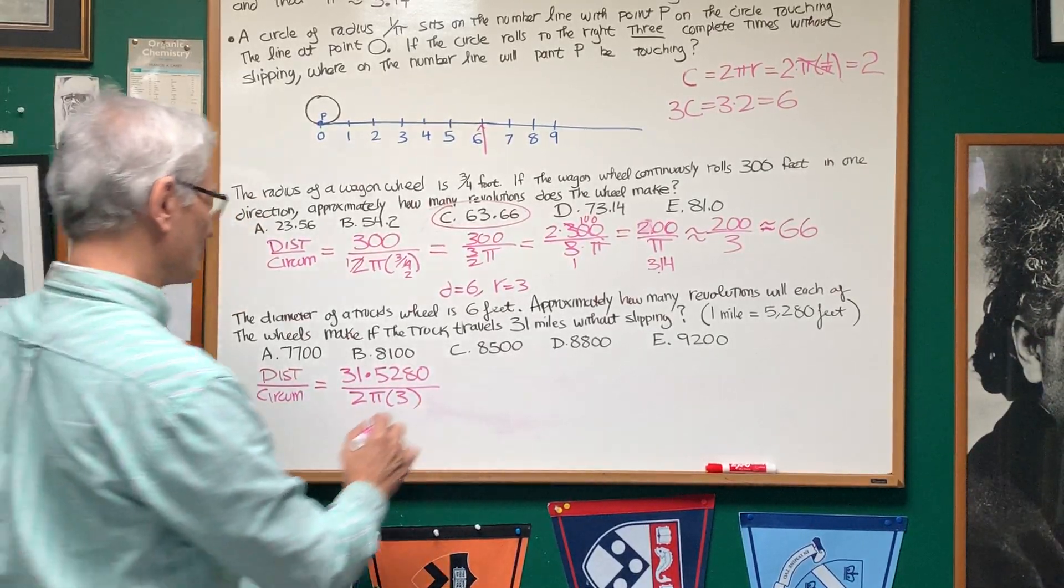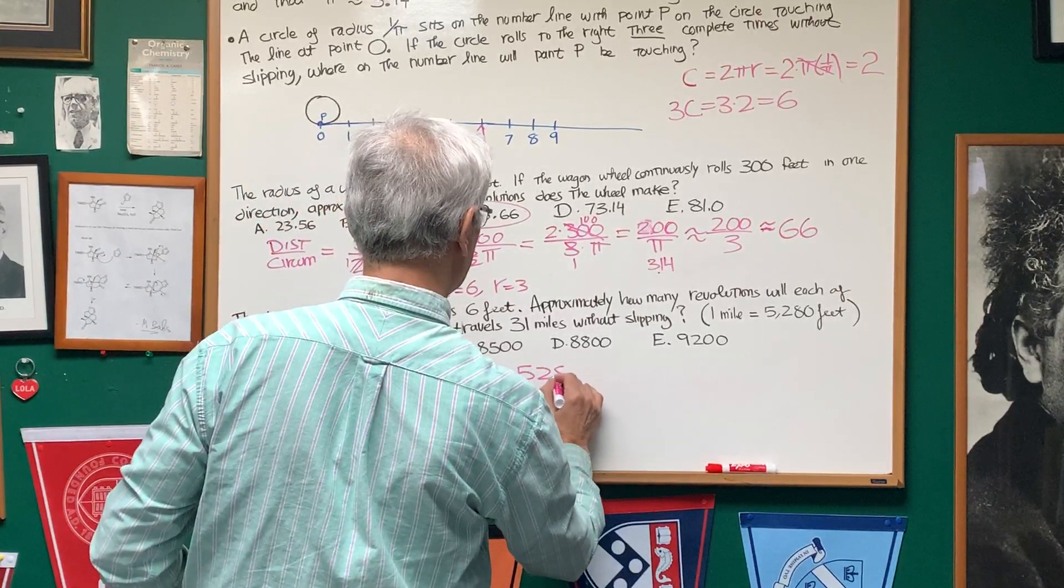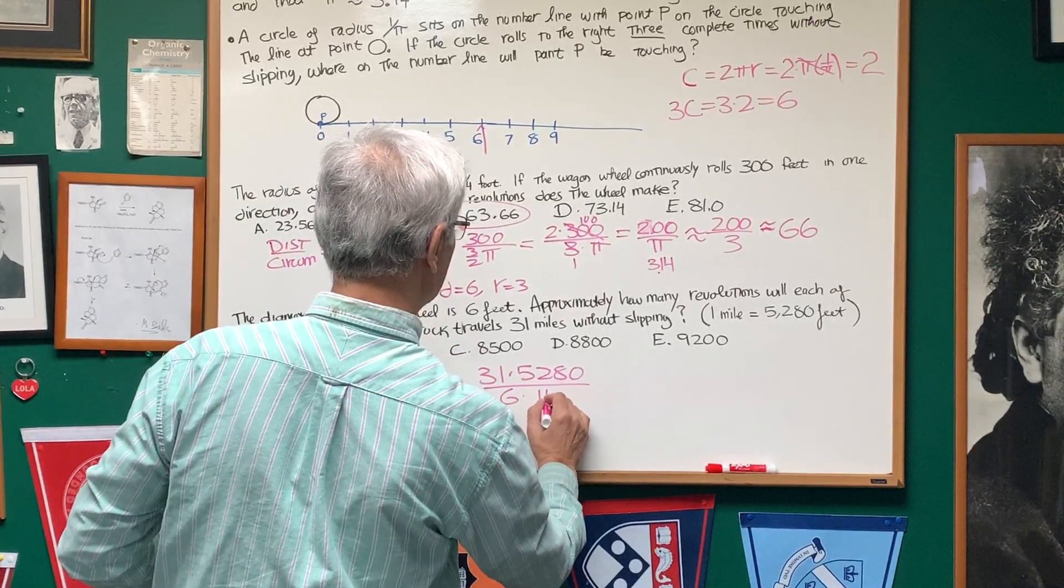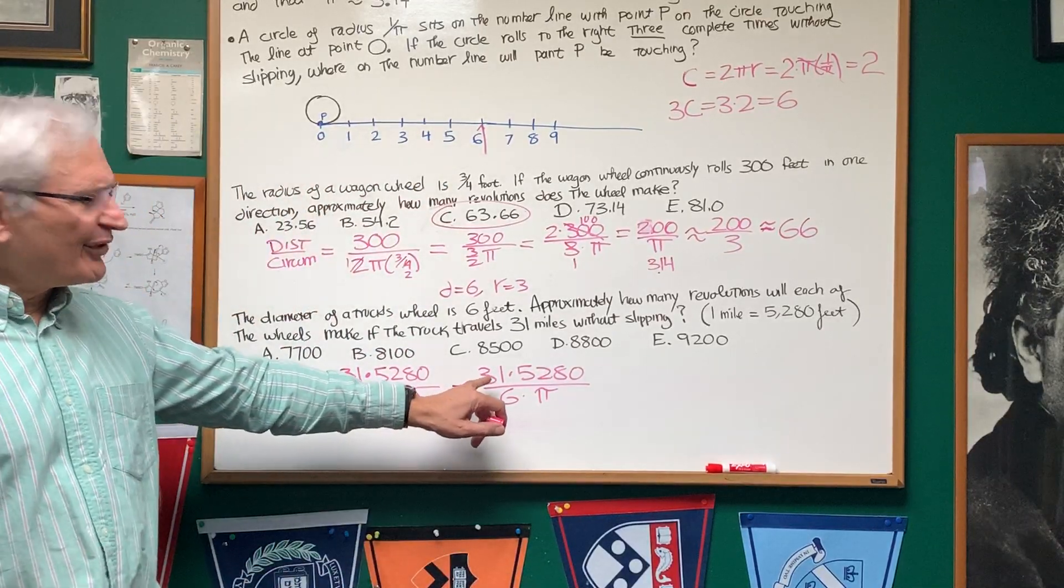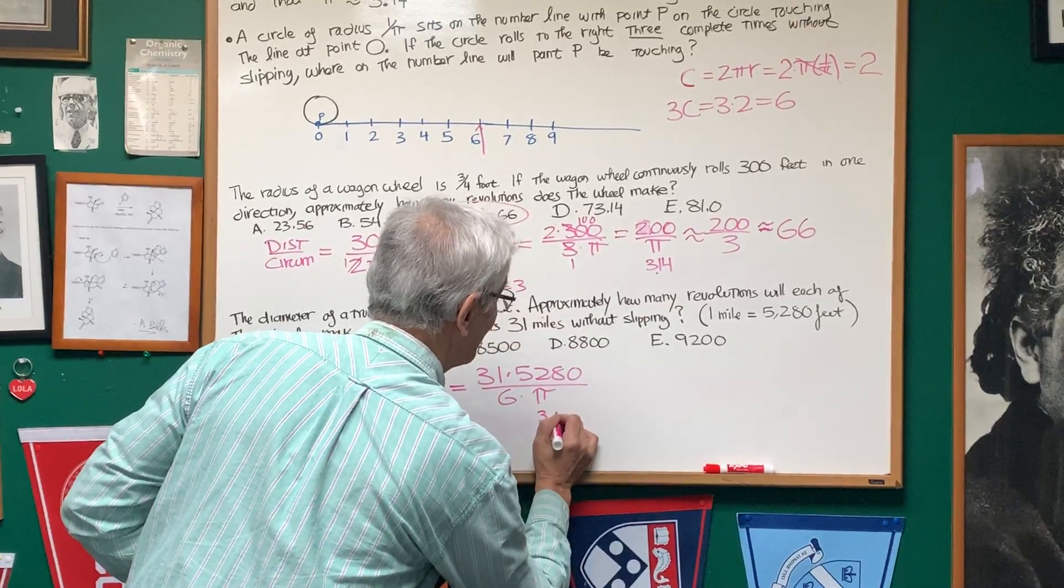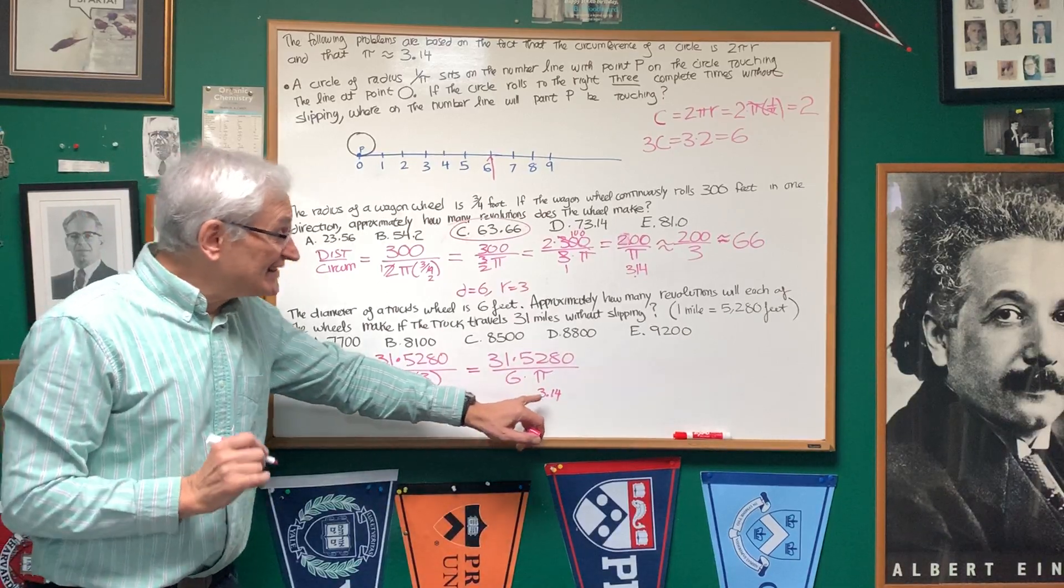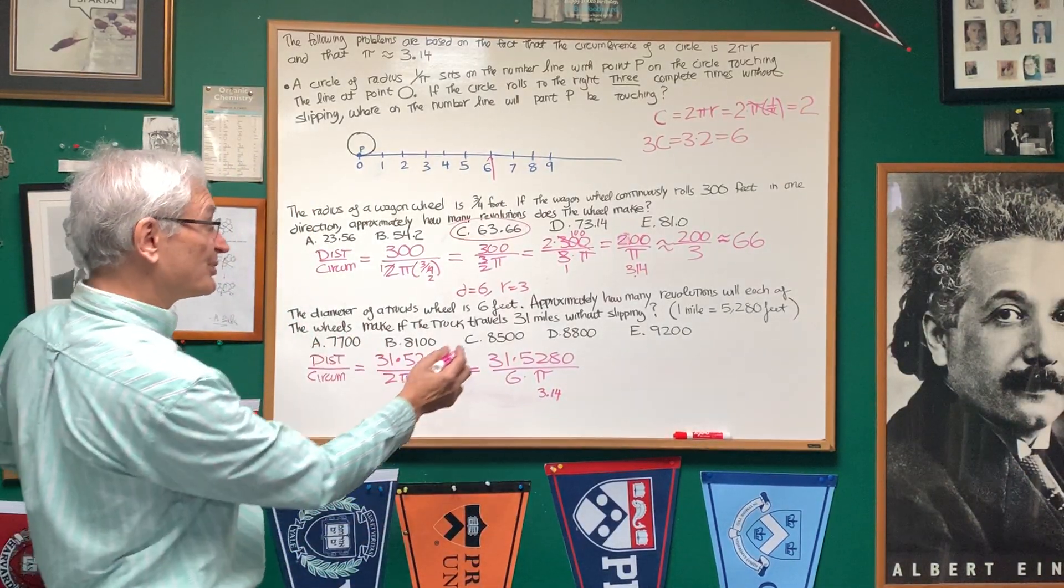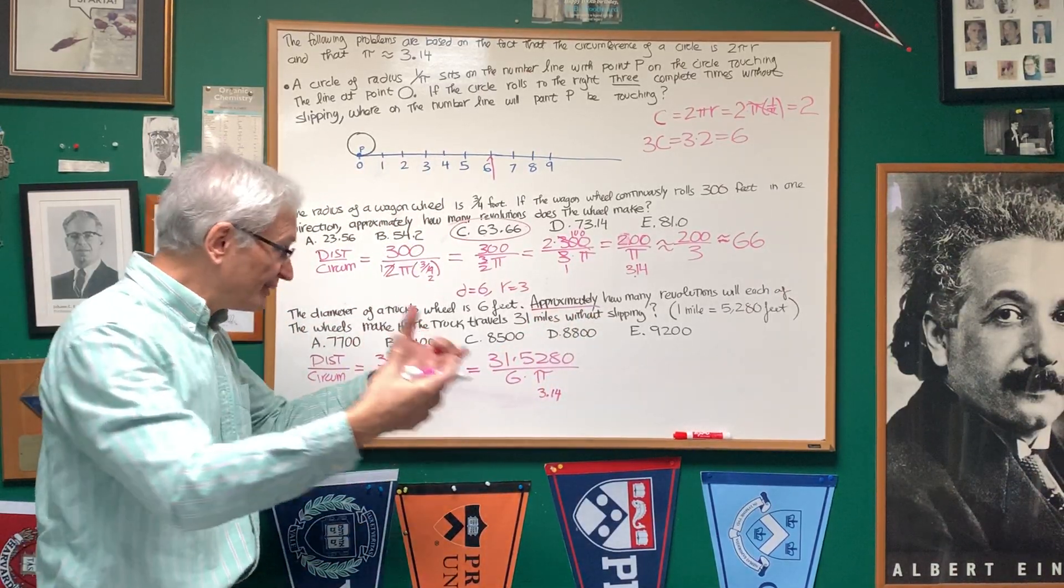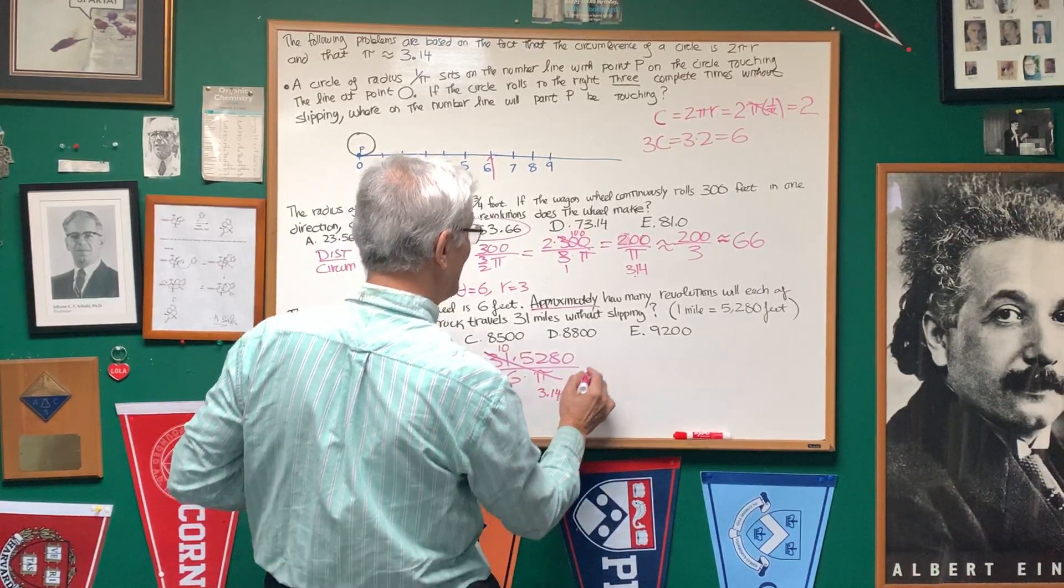So let's figure this out. This is 31 times 5,280 divided by 2 times 3 is 6, 6 times π. Now, the choice of 31 miles may seem unusual, but the value of π is approximately 3.14. So therefore, 31 is approximately 10 times 3.14. We're dealing with approximation here. Look for that key word, approximation. It allows you the flexibility to do things on an approximate basis. I can cancel these two out and make this approximately 10.